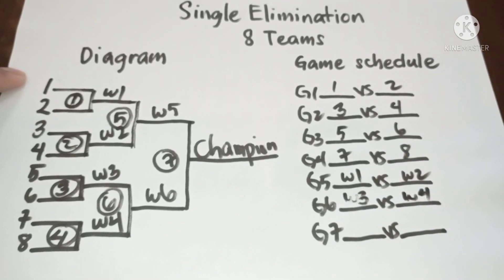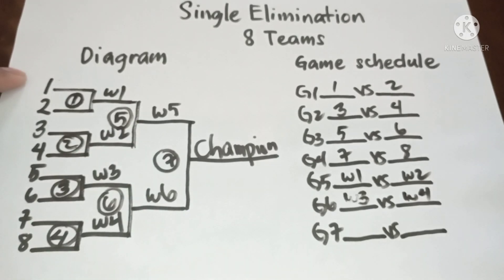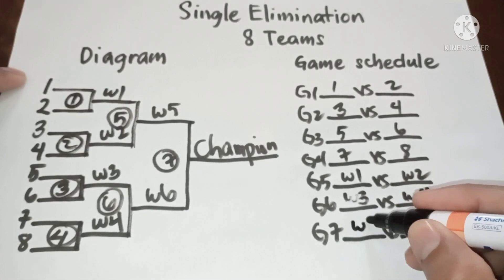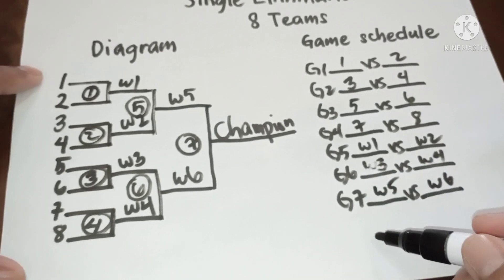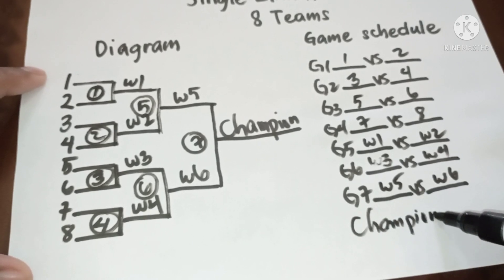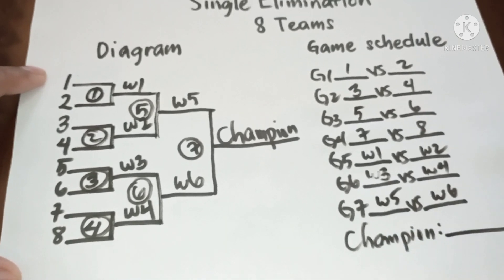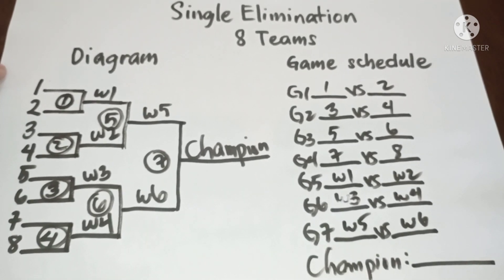In game seven, we have winner five versus winner six. And then, champion. This is the diagram and game schedule for eight teams or eight number of entries.